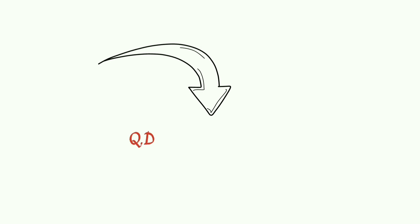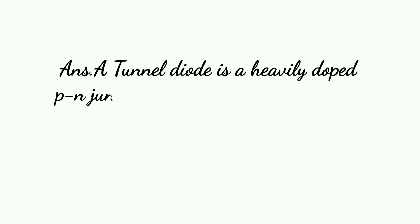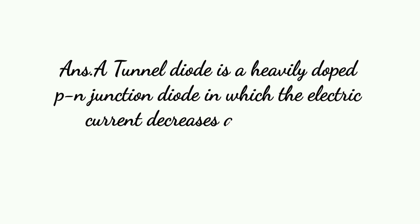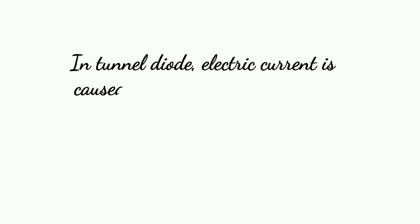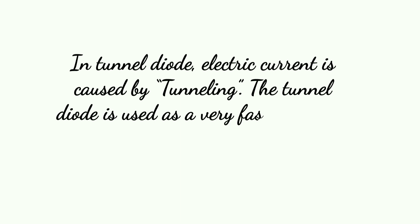A tunnel diode is a heavily doped PN junction diode in which the electric current decreases as the voltage increases. In a tunnel diode, electric current is caused by tunneling. The tunnel diode is used as a very fast switching device in computers.